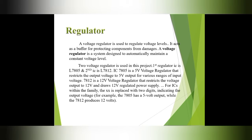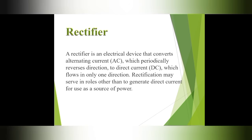IC 7812 is a 12-volt voltage regulator that restricts the voltage output to 12 V, providing a 12-volt regulated power supply. Within the IC family, the 'xx' is replaced with two digits indicating the output voltage. Rectifier: this is an electrical device that converts AC current, which periodically reverses direction, to direct current, which flows in only one direction.